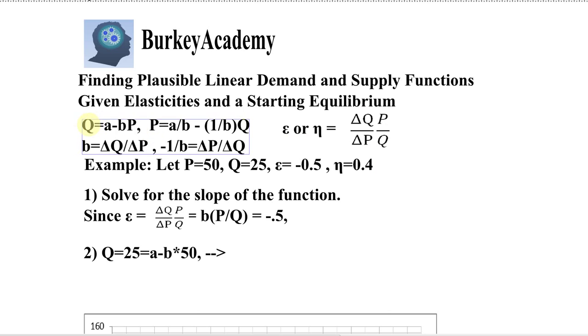Now in this function Q equals a minus bP, the b, or you know it's negative, but the slope is going to be the thing that represents that change in quantity over change in price. And how you can see that is, think about this as a derivative dQ/dP, the derivative of this demand function is minus b. So I'm just going to write it as b, but we know for a demand function it's going to be negative.